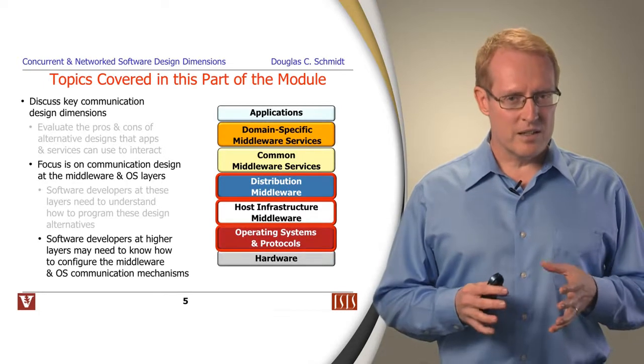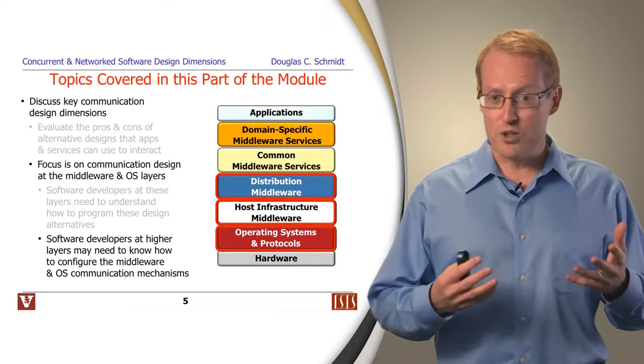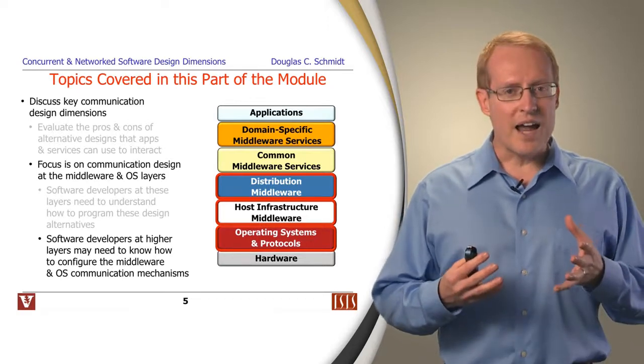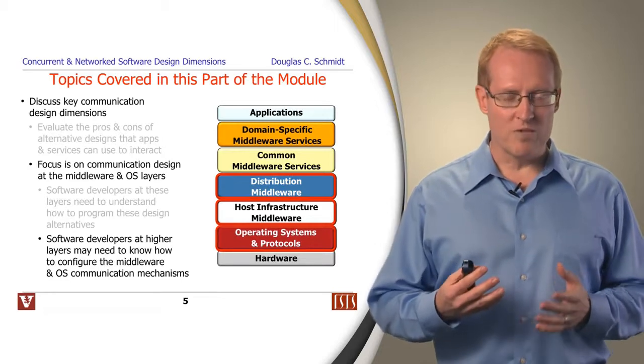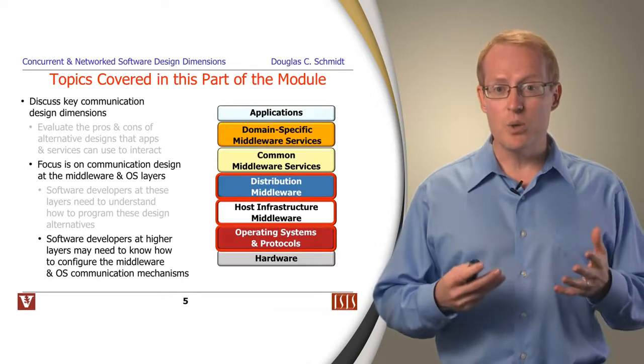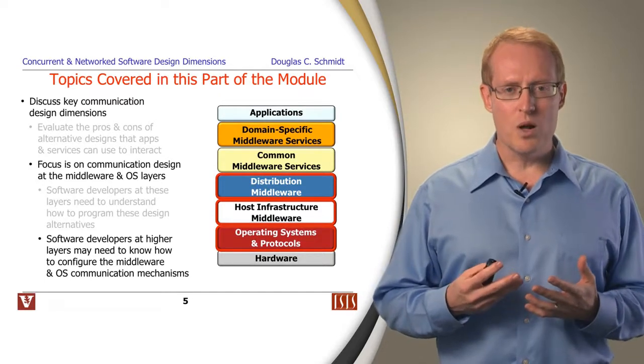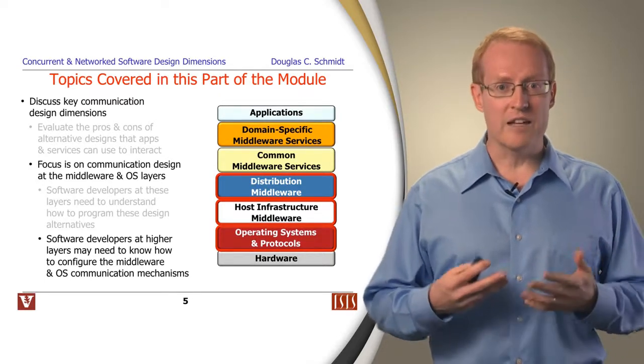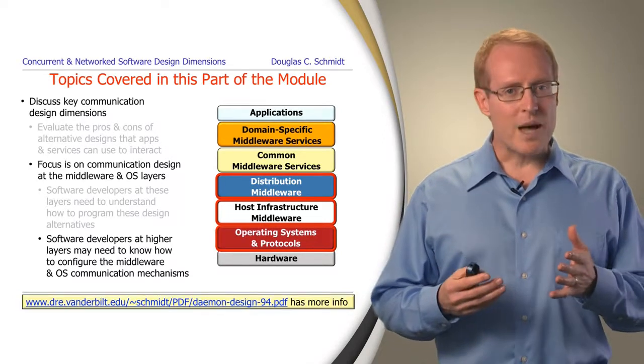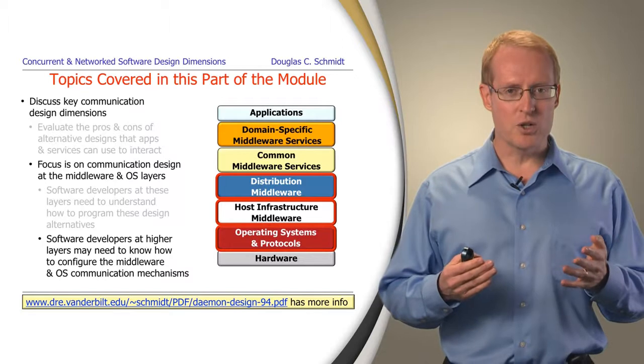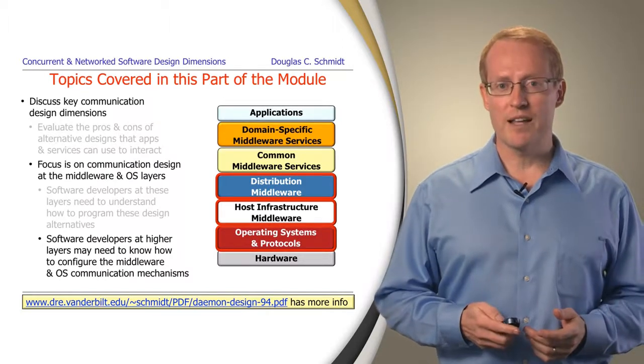Even if you're not developing this lower level infrastructure software or using it directly, the higher level services and applications you may be using possibly will provide you with various configuration and tuning options. So knowing what the different design dimensions are will help to make you more effective as an integrator and configurator of the way these software systems work. The topics we'll be describing in this part of the module are covered in a paper whose URL I provided at the bottom of the screen.